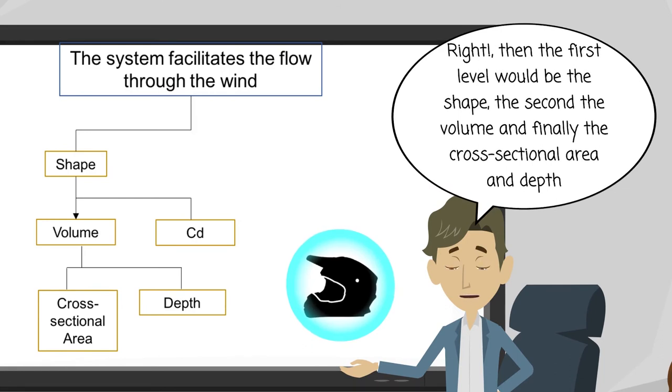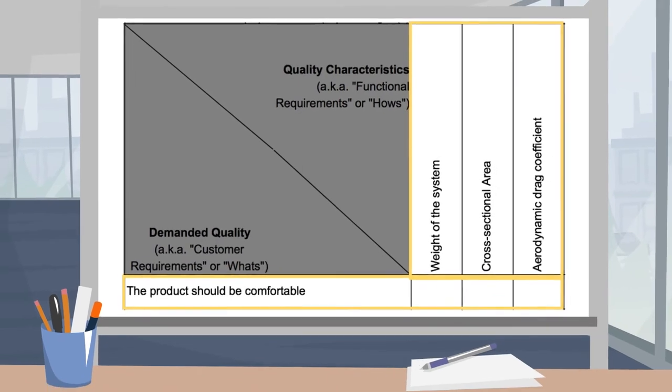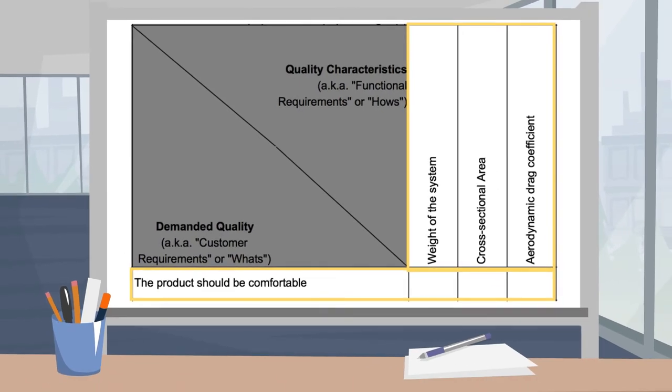Then the first level would be the shape, the second the volume, and finally the cross-sectional area and depth. Our design team have found out the way to quantify the user need interpreted as: the system facilitates the flow through the wind.